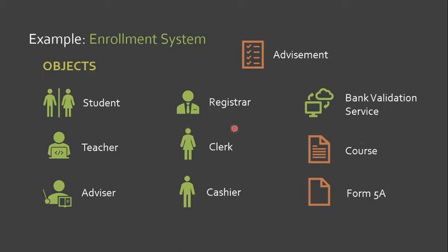These are our objects in the enrollment system. Since we already talked about the types of objects, we can highlight that the student, teacher, advisor, clerk, registrar, and cashier are a type of object called roles. The bank validation service can be classified as an external entity.